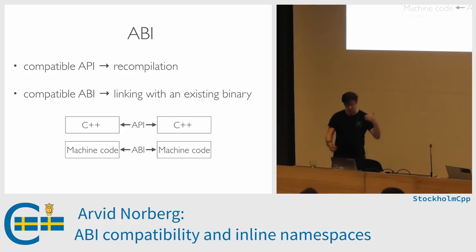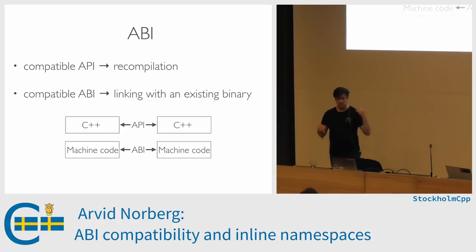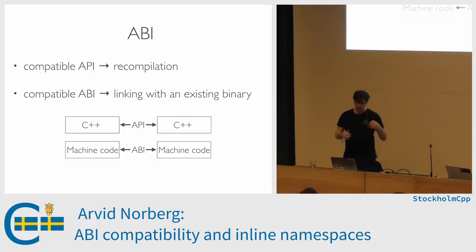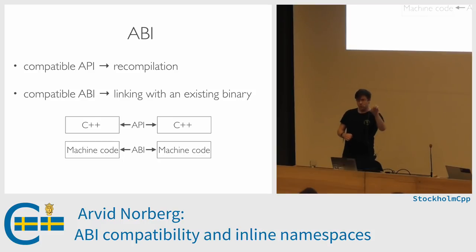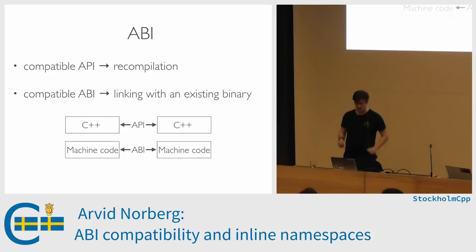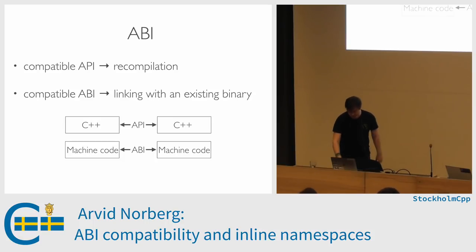If you have a compatible API, that means you can recompile your source code and it will work. If you have a compatible ABI, it means that you can recompile one side of the interface and it will still work, or the other side of the interface and it will still work. So it's a stricter requirement.